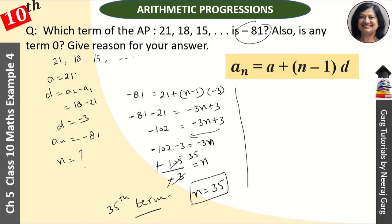After this, what is the question asking? Also, is any term zero? Is any term zero? For that we use the same formula: a + (n-1)d = 0. We set it equal to zero and find the value of n. A is 21 plus (n-1) and d is minus 3, that equals 0.